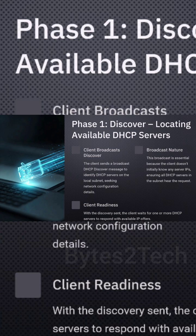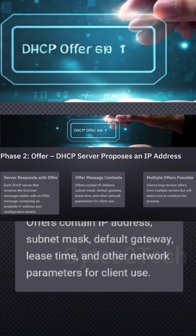DORA is a four-stage process — the sequence a device, the client, uses to get its network setup details, mostly the IP address, from a DHCP server. And those four stages are: Discover, Offer, Request, and Acknowledge. That exchange is what makes it all automatic.